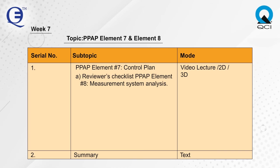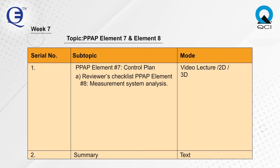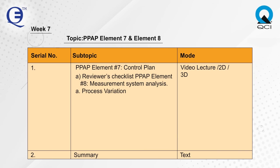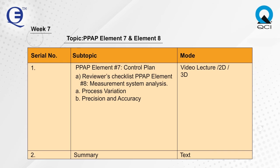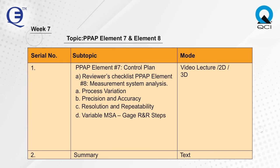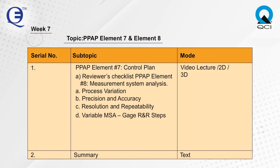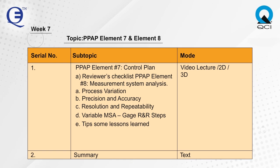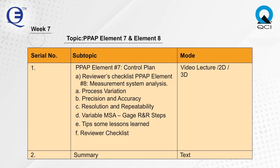Week 7 covers PPAP Element 7 and Element 8. Element 7 is the Control Plan with a reviewer's checklist. Element 8 is Measurement System Analysis, covering process variation, precision and accuracy, resolution and repeatability, variable MSA, Gauge R&R steps, tips, some lessons learned, and a reviewer checklist.